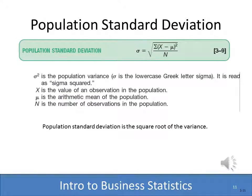After we've computed the variance for the population, it's very easy to get the standard deviation. The standard deviation is simply the square root of the variance. Sigma is used to designate standard deviation, and sigma squared designates the variance. So in this case we take the square root of the variance formula, and we have the population standard deviation.